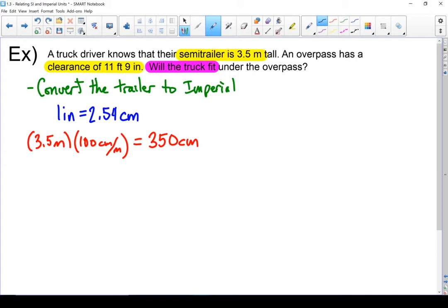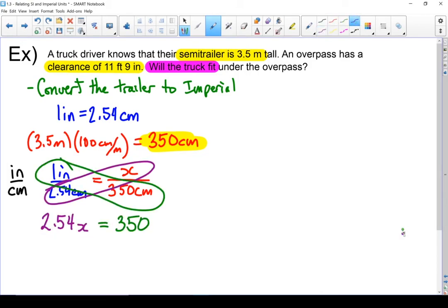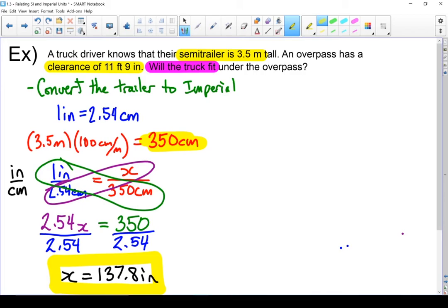Now let's set up our conversion ratio. We'll go between inches and centimeters. That is 1 inch equals 2.54 centimeters equals. Put our question number in which is this number right here. That number goes down on the bottom because it is centimeters and on top I'm going to put my x. And from here it's cross-multiplying. All right I just figured out that that semi-trailer is 137.8 inches tall.